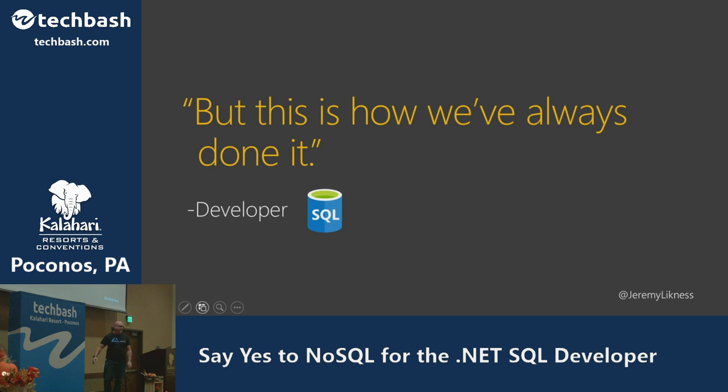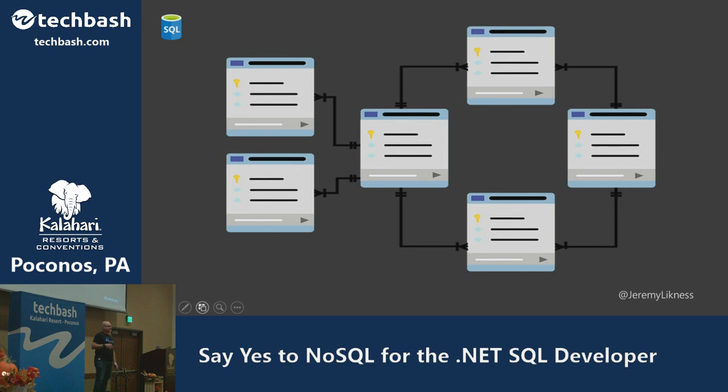Relational databases have been around a very long time. I'd be oversimplifying it if I said the only reason relational databases existed was to solve the storage problem, but that was a huge driver decades ago when storage was exponentially more expensive. The idea was to minimize data and have tight relationships. There are lots of other advantages — this is not about non-relational being bad or replacing relational databases. This is about another approach you can use to augment your tools.